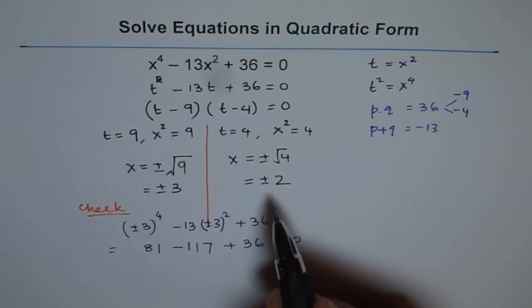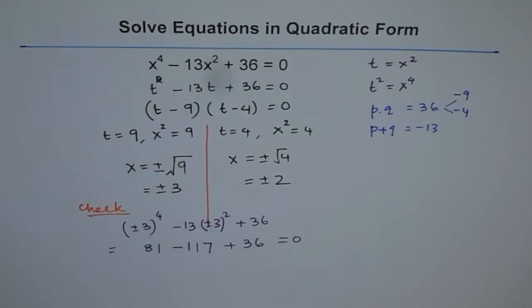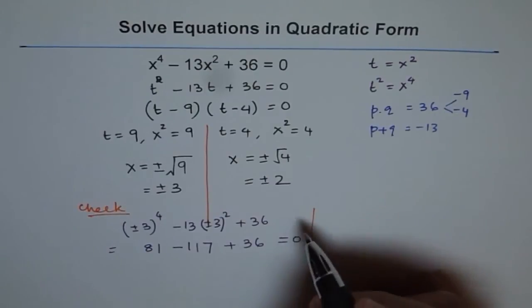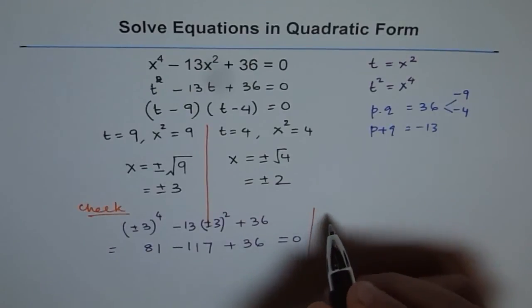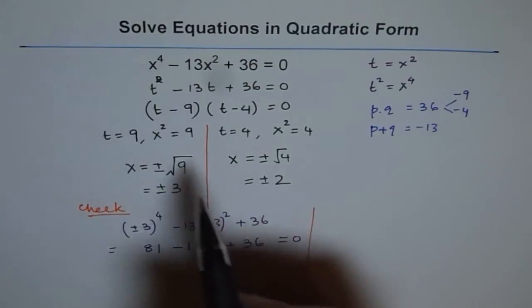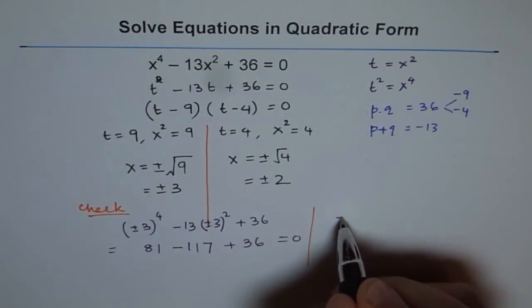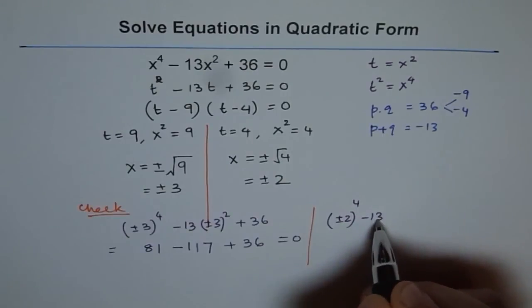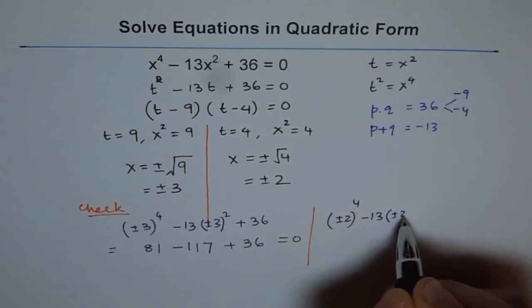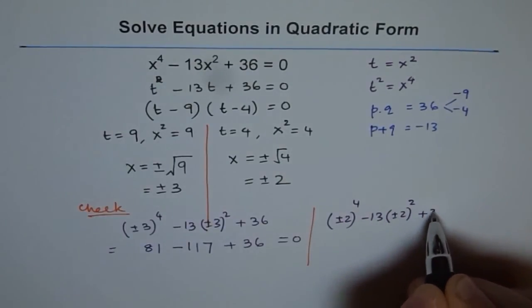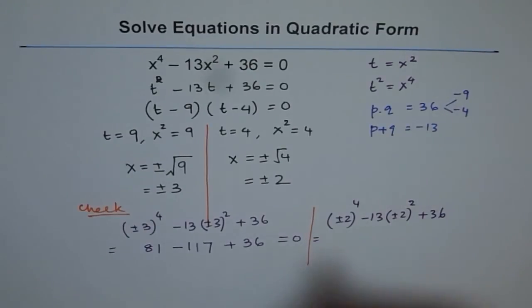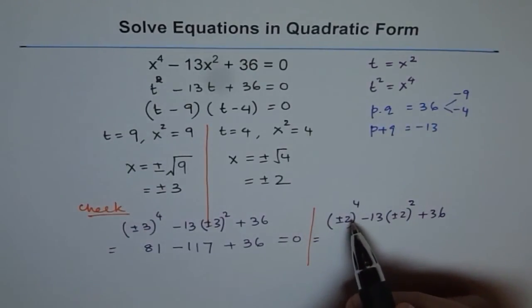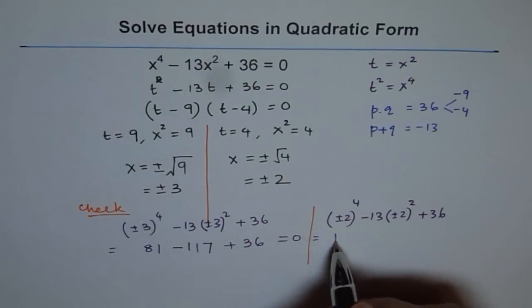So let me try this over here. It's a good idea to check it with calculator. It is extremely fast. So let's do plus and minus 2 for x. So we get plus and minus 2 to the power of 4 minus 13 times plus and minus 2 to the power of 2 plus 36. Let's check how much it is. 2 times 2 is 4, 4 times 2 is 8, 8 times 2 is 16. So that gives me plus 16.